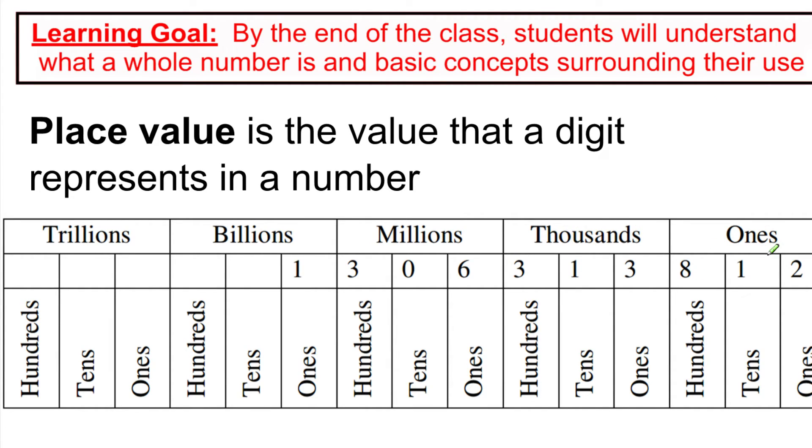What you're seeing is that every single group of three values in our number is going to have hundreds, tens, and ones. And we just read it as a normal number. This is 812. This is 313. This is 306. And then we're just going to attach the label based on which group it is.